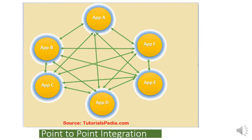Point-to-point integration is the oldest integration architecture. In this model, if we have multiple applications that want to communicate with each other, integration logic must be implemented on each and every application with respect to the other integration party. For example, if application A wants to integrate with application B and application C, all logic for translation, transformation, content routing, and protocol-related information must be implemented in application A with respect to the protocols and data models of application B and C.